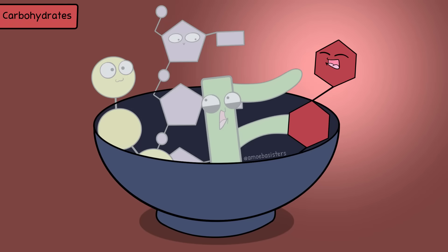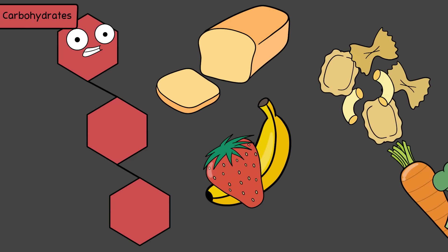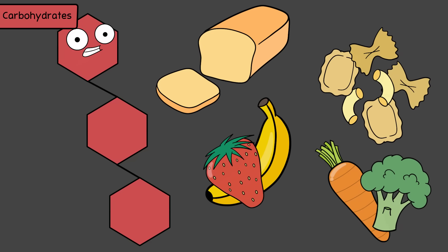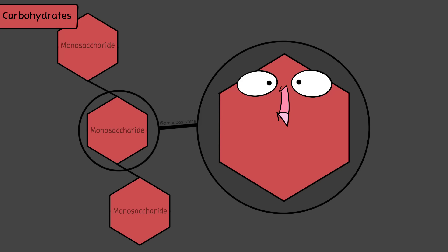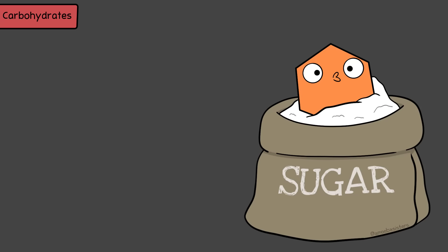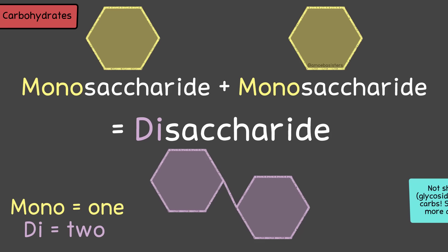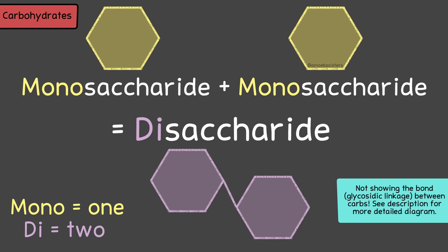We'll start with the biomolecule class of carbohydrates. Generally, food sources such as bread, pasta, fruit, and vegetables tend to be high in carbohydrates. The monomer of a carbohydrate—that means the building block—is the monosaccharide. One example of a monosaccharide is the sugar glucose. Glucose is a pretty big deal considering it's used in cellular respiration to make ATP, an energy currency. If two monosaccharides, such as glucose, are combined, you get a disaccharide.